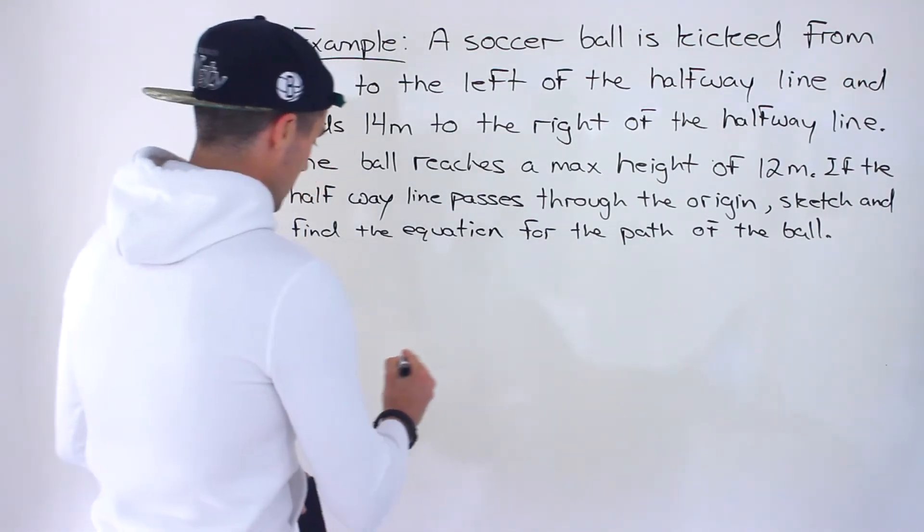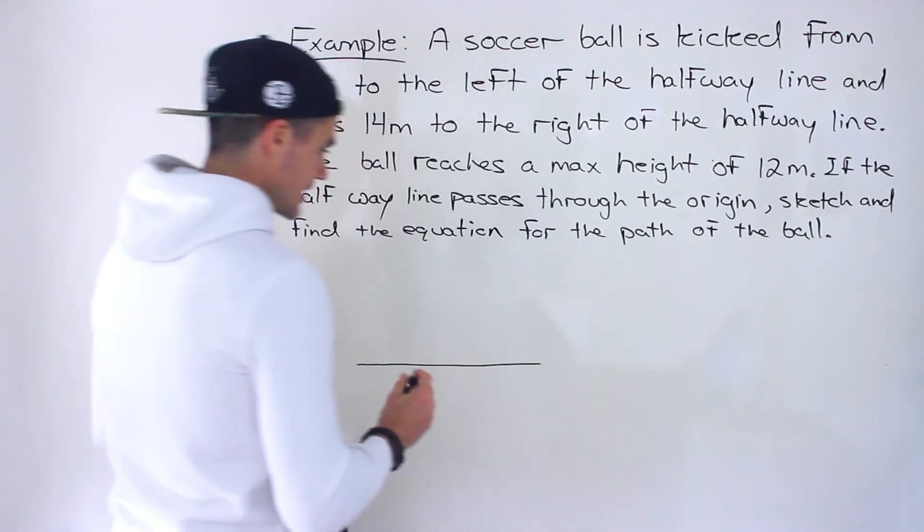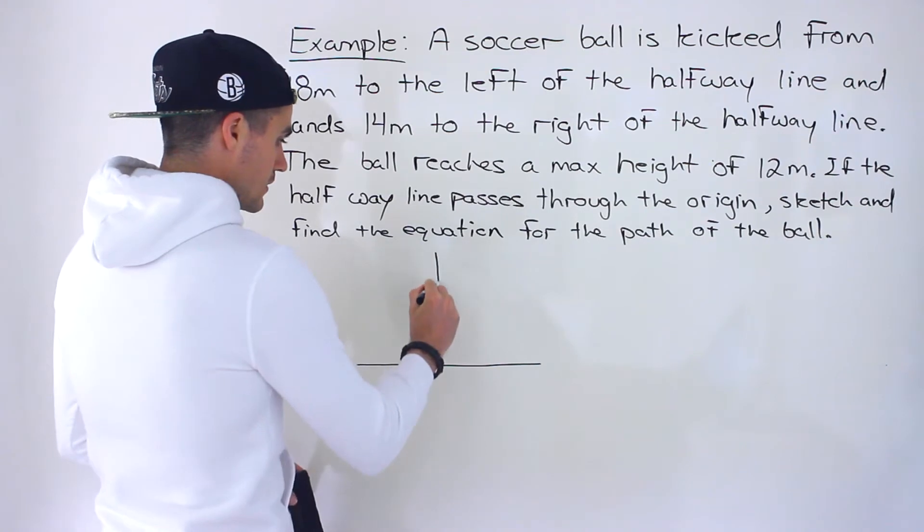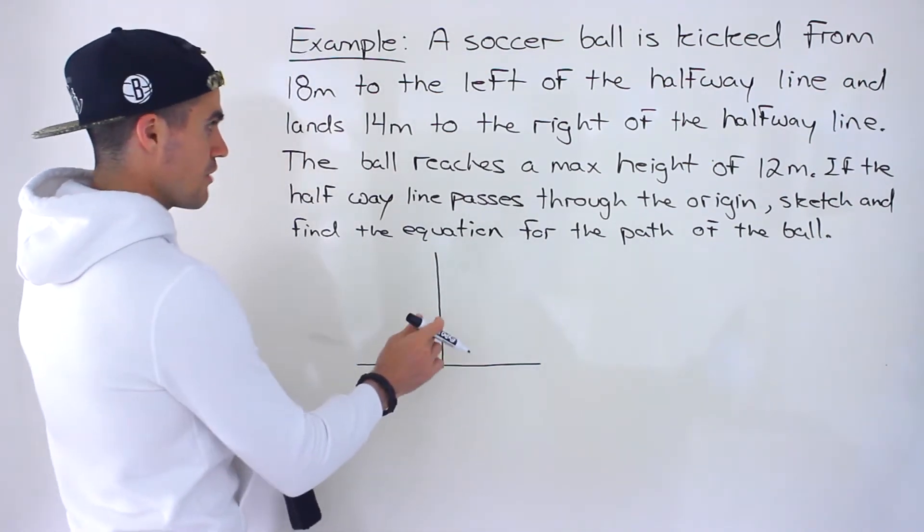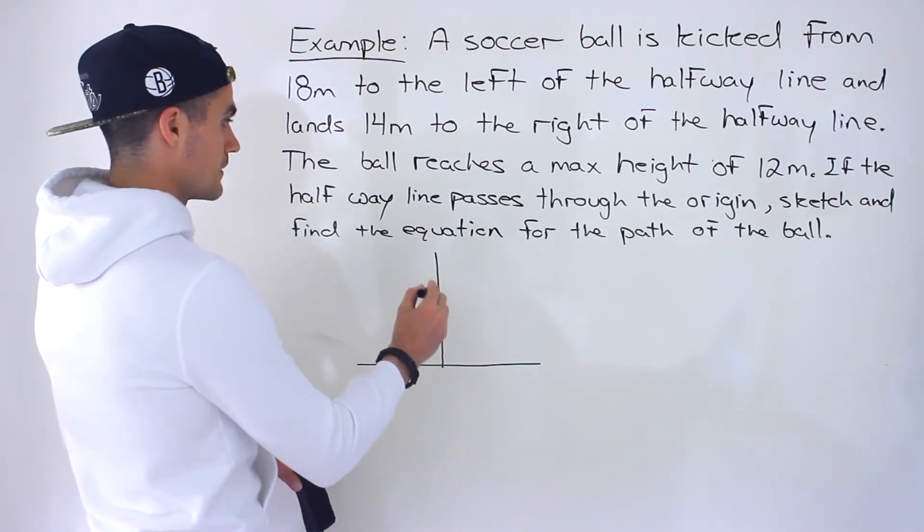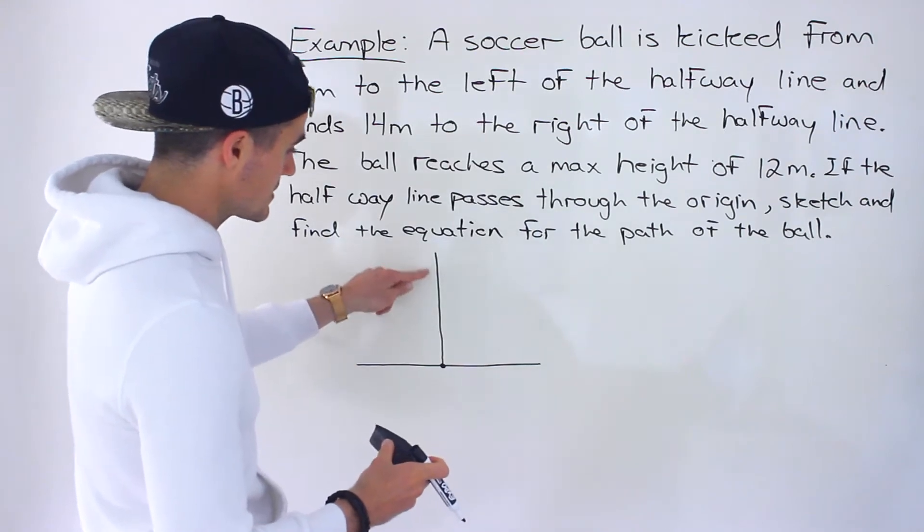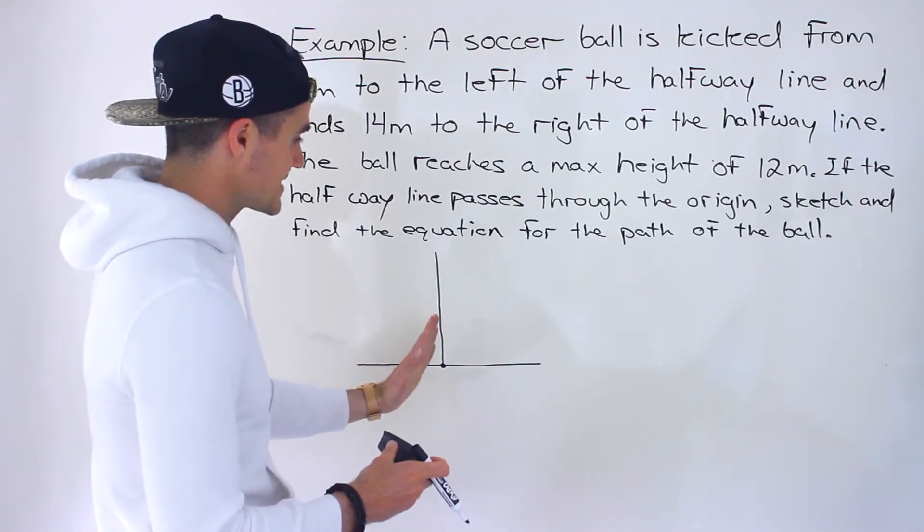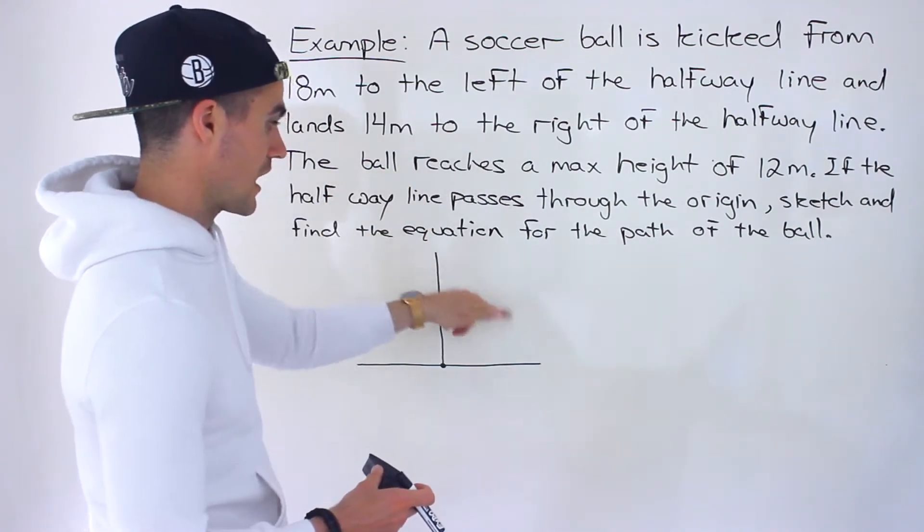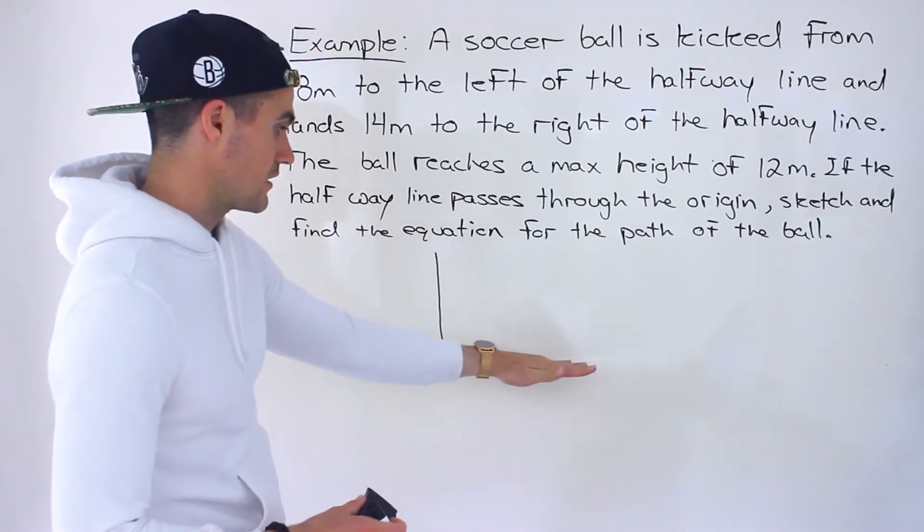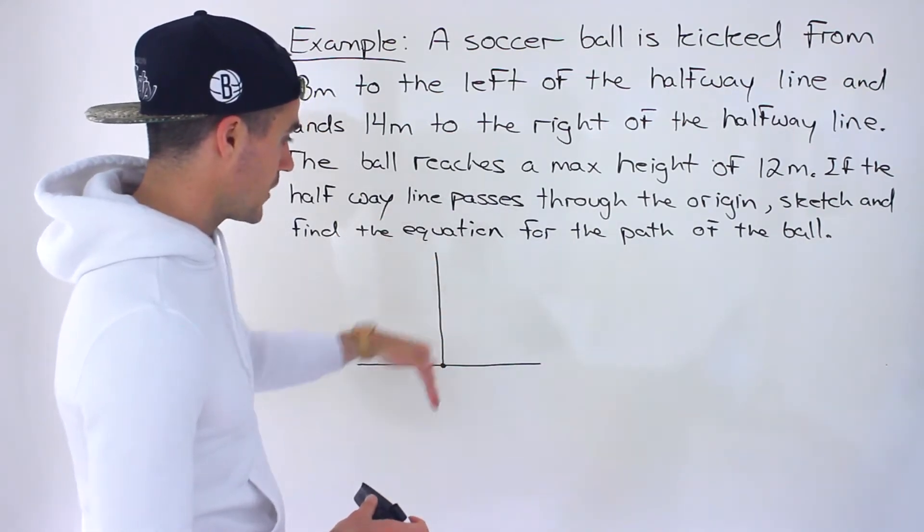So what's happening here is let's say this is the ground and the halfway line is passing through the origin. We could think of the y-axis here as sticking out of the ground because it's going to measure the height. And so this here is the field, and it's going right through that halfway point.